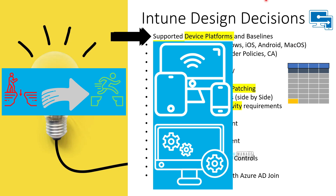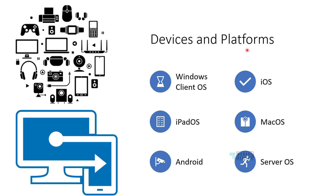Just a quick recap: we covered Intune design decisions in the last video — I'll link that in the description. We are going to cover the first point in that decision-making process: supported device platforms and baselines. I recommend watching that video if you haven't seen it. Now let's look into devices and platforms.